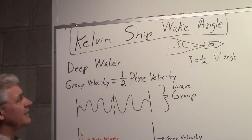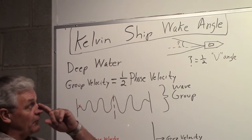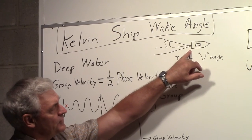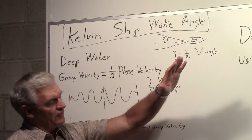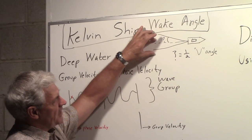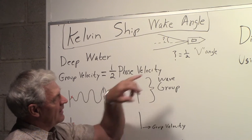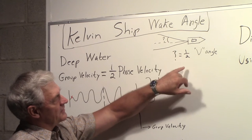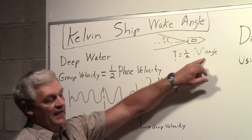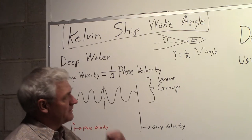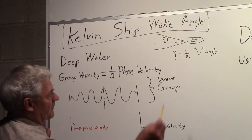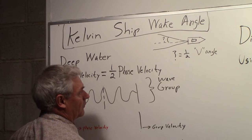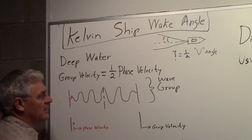We want to determine the Kelvin ship wake angle. Everybody's familiar with the fact that when a ship moves across a body of water, it produces a V-shaped wake behind it. The question we're asking is, what is that angle? We're going to be looking at one half that V angle. We're looking from the center line to the outer bound of the wake. That's the angle we're after.